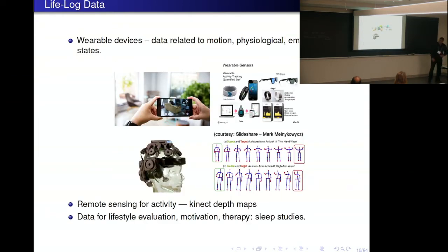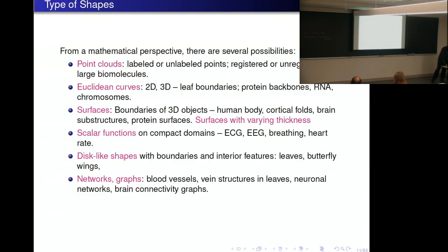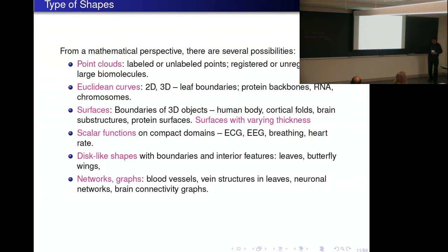I mentioned the life log data — this is really a fast-growing area. There is so much recording and so much information about individuals on a daily basis, generating lots of data. These are my motivations, but there are many more applications where one can look at shapes. Just trying to get a little more specific now: what kinds of shapes can we talk about from a mathematical point of view?